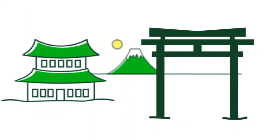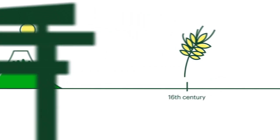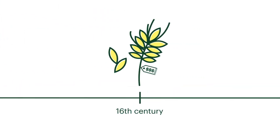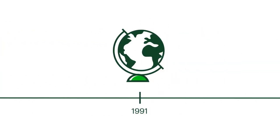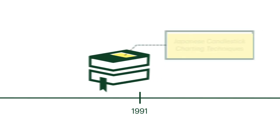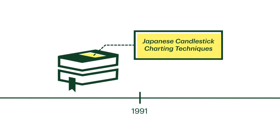It's believed that candlestick charts date back to 16th century Japan, when rice traders used them to track the price of rice. In 1991, they began gaining popularity across the Western trading world after a book called Japanese Candlestick Charting Techniques laid out their benefits.